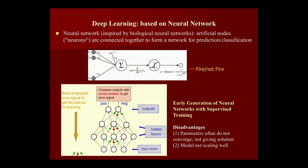Early-generation neural networks did have problems. The parameters often did not converge and gave no solution, and the models did not scale well. In the traditional model, data goes to the input vector, propagates forward through hidden layers to the output — for example, positive or negative — and the results are compared to the known result. Then backpropagation computes the derivative of the error signals for learning.